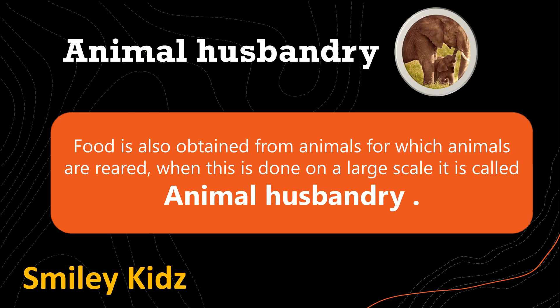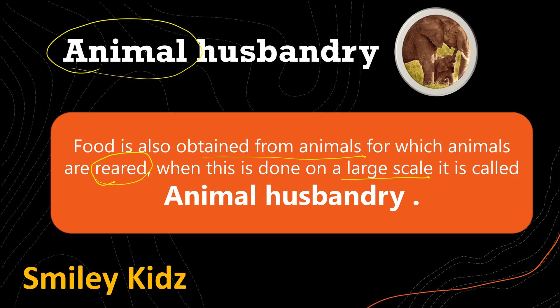We have seen that plants give us food. In the same way, animals also give us food — such as cow, buffalo, goat, and camel — all of which give us milk. Food is also obtained from animals, for which animals are reared, and when this is done on a large scale it is called animal husbandry.